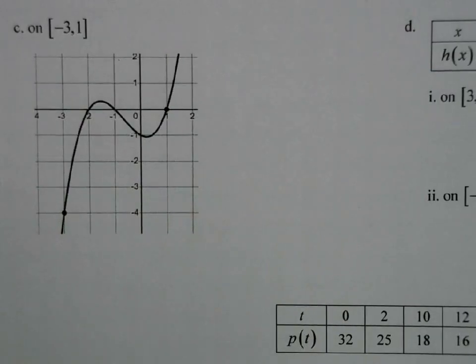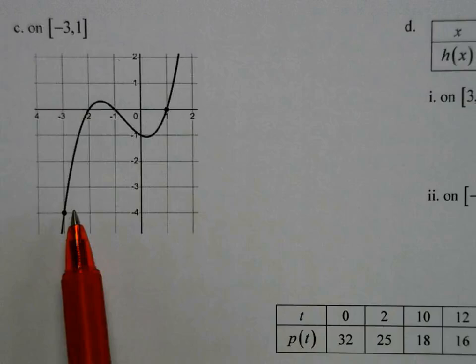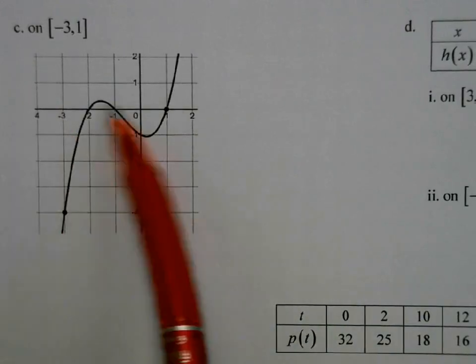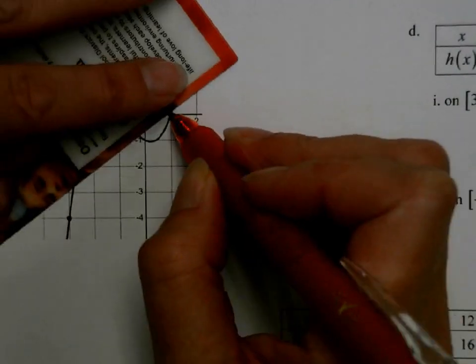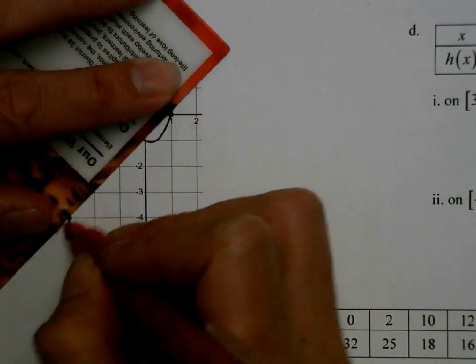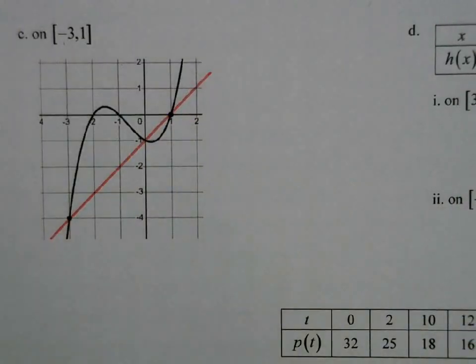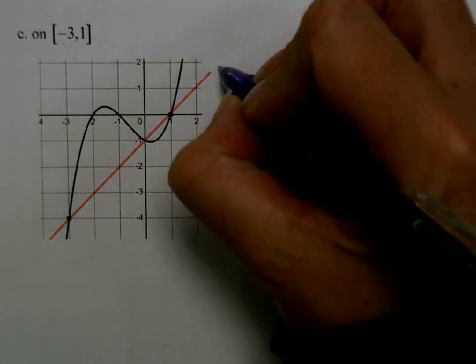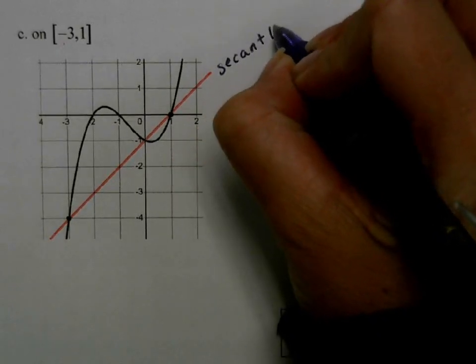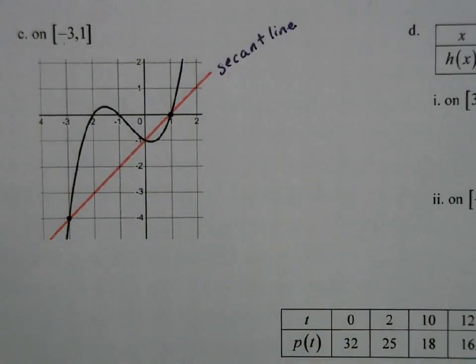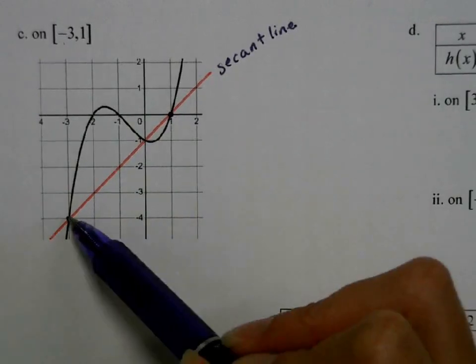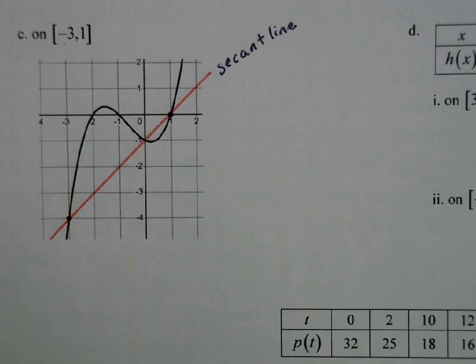Now we're looking at a graph, and this is a good moment to talk about the graphic consequence of the average rate of change. On this graph, I have a point at negative 1, negative 4, and a point at 1, 0, and that's my interval. I'm actually going to go ahead and draw a line through those points. Because physically what we're doing here is finding the slope of this line. A line that goes through two different points on a graph is called a secant line. The slope of the secant line.